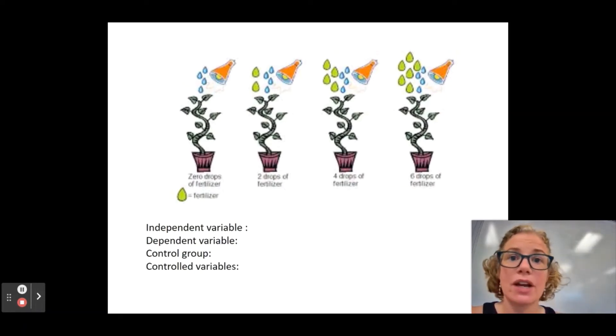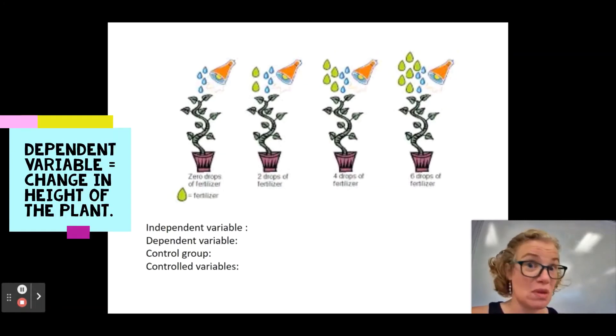We want to make sure our dependent variables are always measurable, right? If you're going to say how well it grows, you're going to have to develop some sort of scale. That's going to be really hard to do. So height of the plant would probably be a good, easy, measurable thing, assuming you were able to start with all the same height. Maybe change in height would be better in case there's a little bit of difference in their starting height.